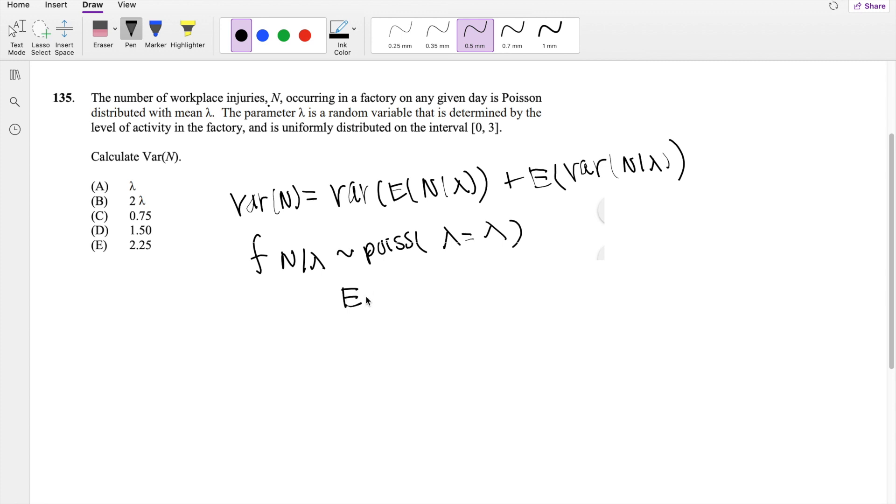So we know for Poisson distribution, the expectation of n given lambda will be equal to just lambda. And then we also know the variance of n given lambda. The expectation and the variance are the same for Poisson distribution, so it's also going to be just lambda.